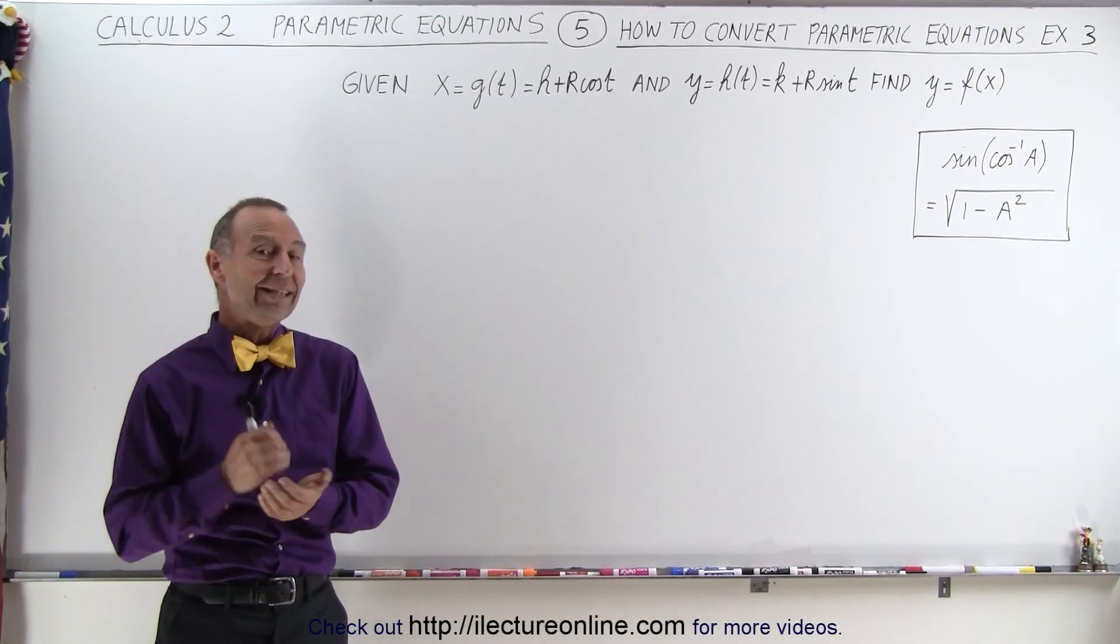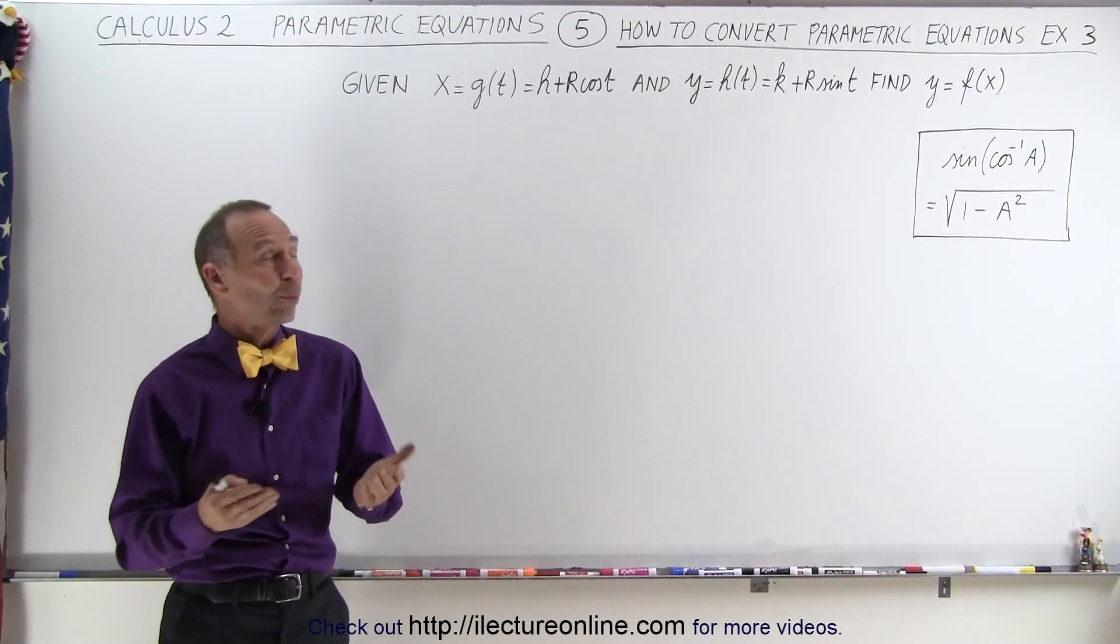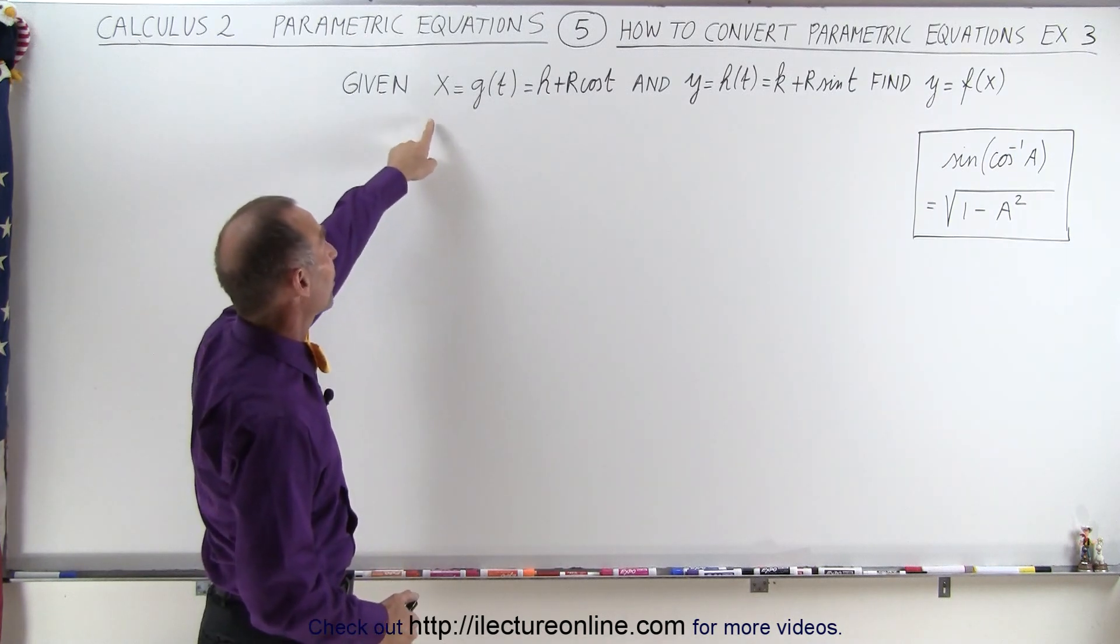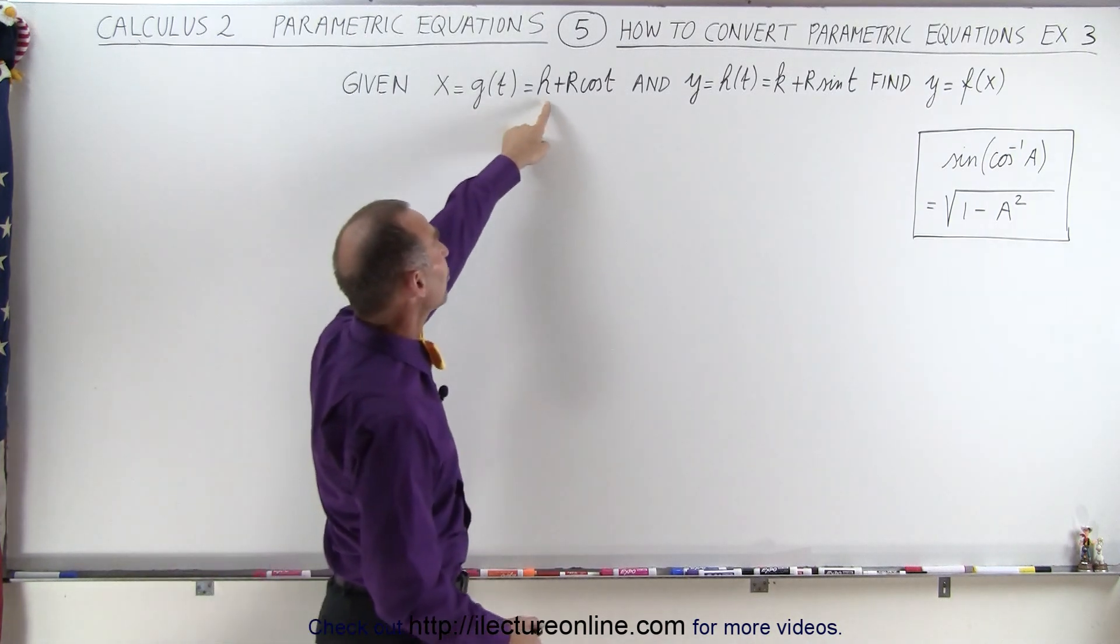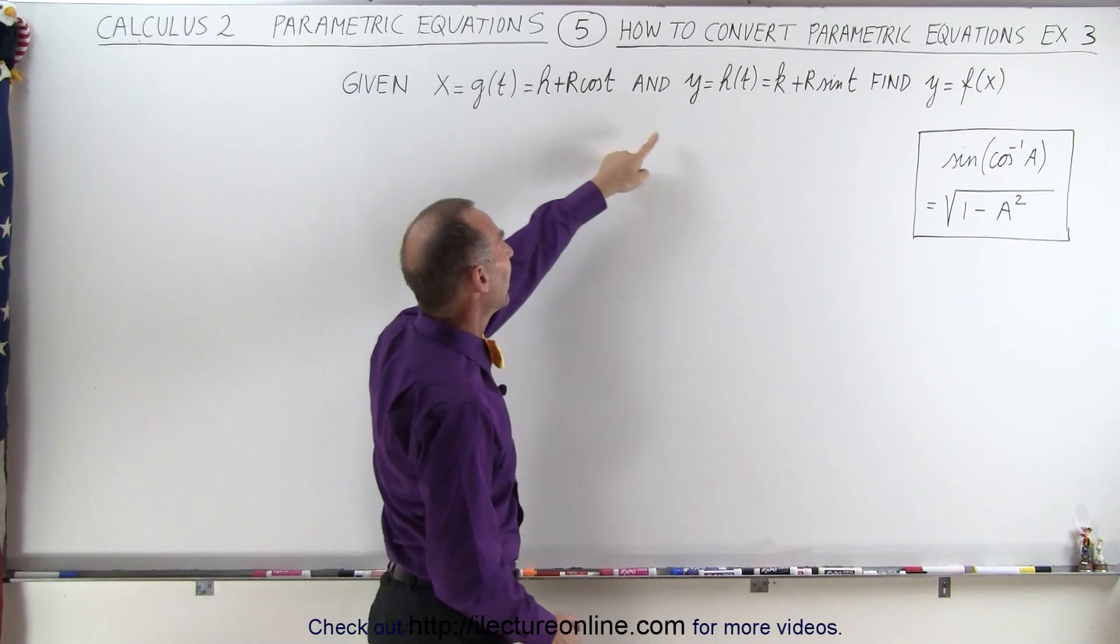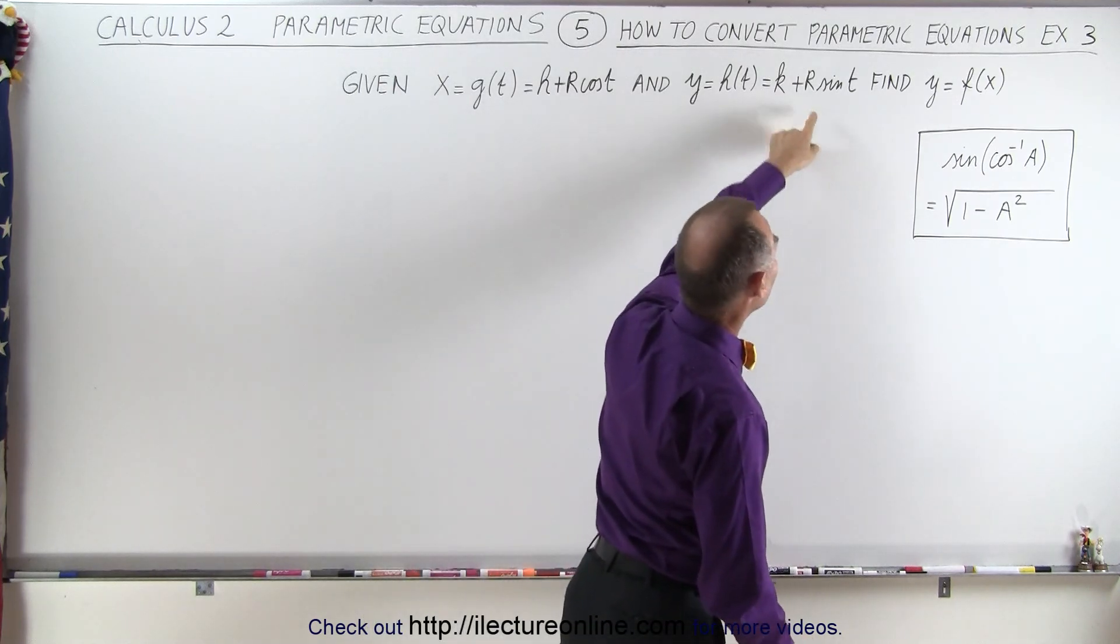Welcome to our lecture online. In this example you may not realize what these two parametric equations represent. X equals H plus R times the cosine of T and Y equals K plus R times the sine of T.